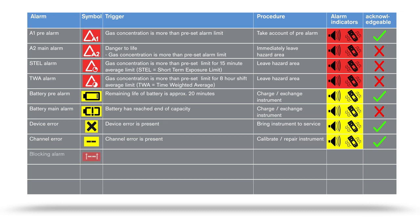In case of a significant overrange — i.e., excessive concentration of flammable substances on the CAT-X channel — a blocking alarm is triggered. This alarm can be acknowledged by manually switching off the gas detector and switching it on again in fresh air. There is one exception to this.